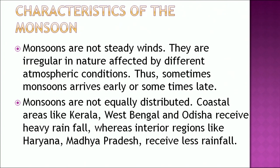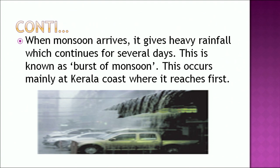What are the characteristics of monsoon? Monsoons are not steady winds — they are irregular in nature, affected by different atmospheric conditions, and sometimes arrive early or late. Monsoons are not equally distributed; coastal areas like Kerala, West Bengal, and Odisha receive heavy rainfall, whereas interior regions like Haryana and Madhya Pradesh receive less. When monsoon arrives, it gives heavy rainfall which continues for several days — this is known as the burst of monsoon, and it occurs mainly at the Kerala coast where it reaches first.